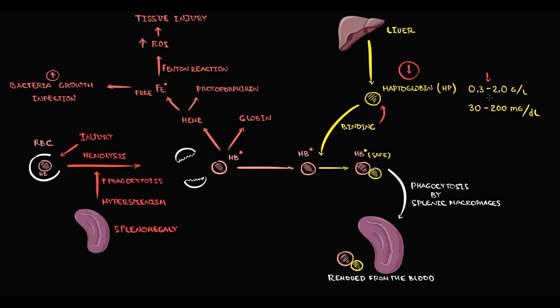So, decreasing haptoglobin is provoked by a release of free hemoglobin, and the release of free hemoglobin is caused by hemolysis of red blood cells. That's why decreasing haptoglobin is a marker of hemolytic anemia.